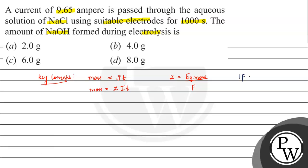1 Faraday is equal to 96500 Coulomb, which is the charge on 1 mole of electron.